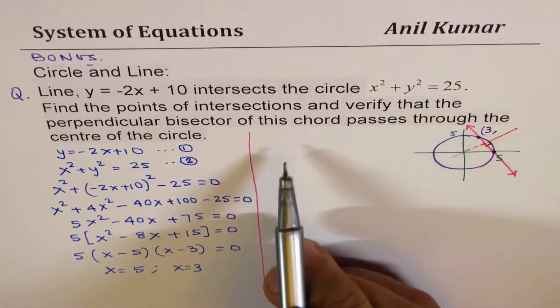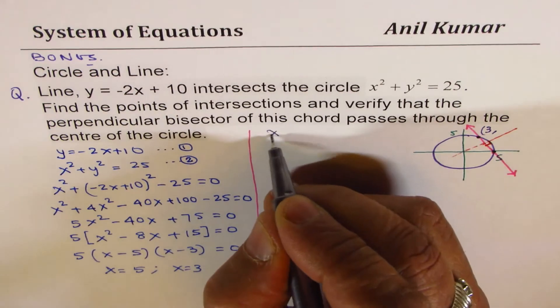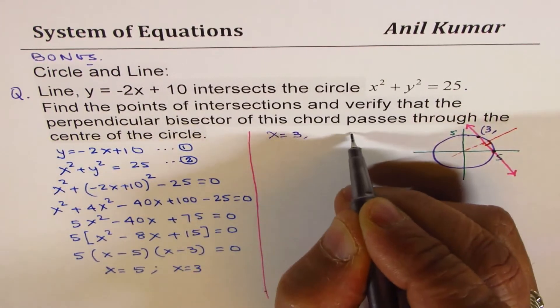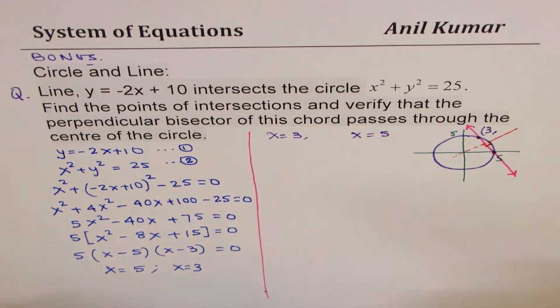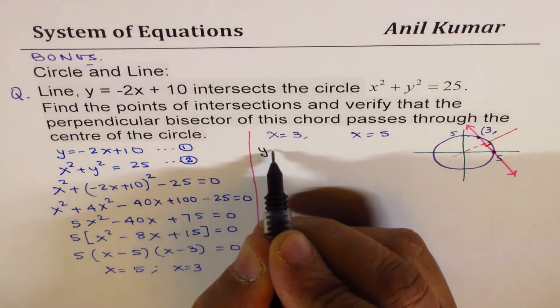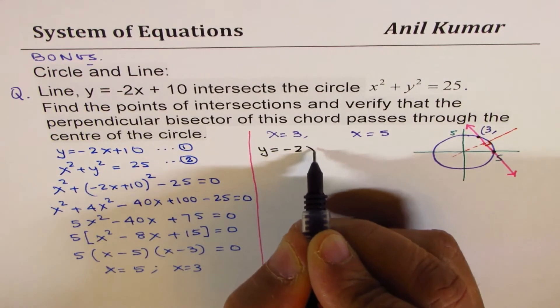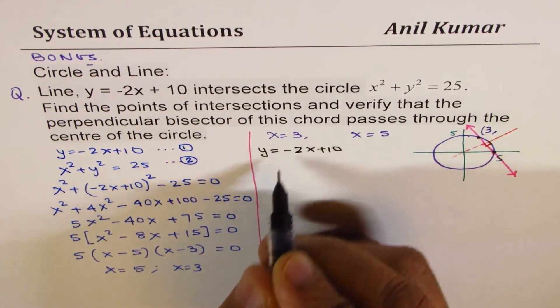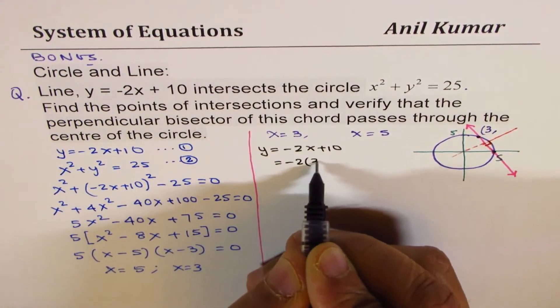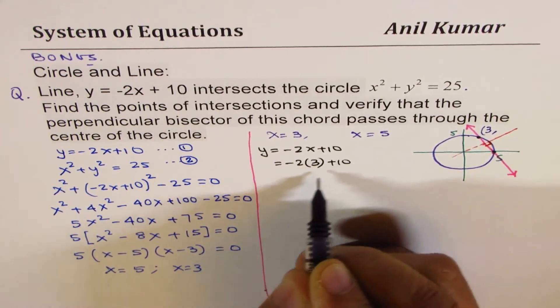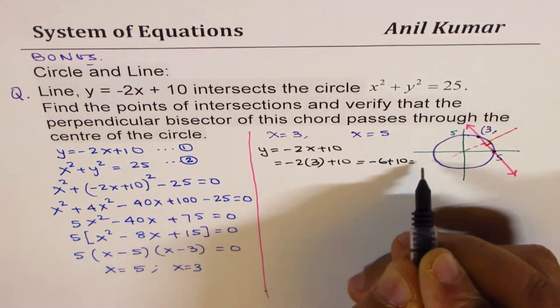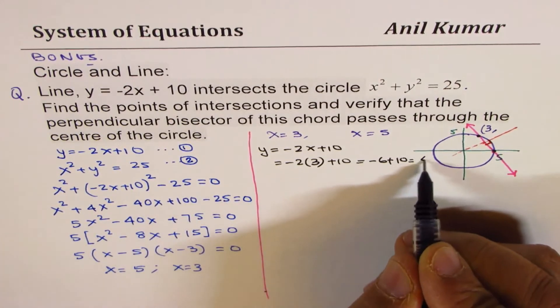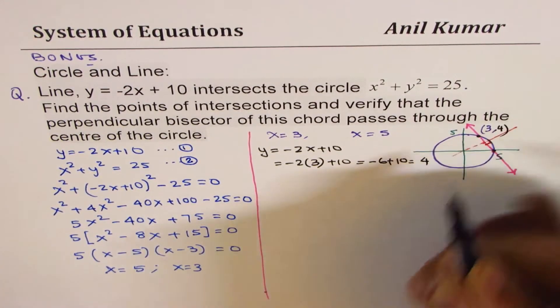If x is 3, we can find what y is. So we know x equals 3 and we know x equals 5. Let's calculate. y equals minus 2x plus 10. So if I substitute 3 here, I get minus 2 times 3 plus 10, which is minus 6 plus 10 or 4. So this point is 3, 4.